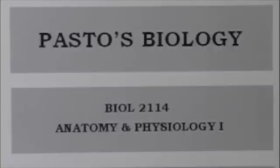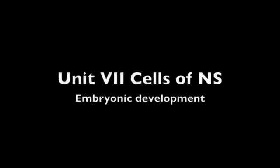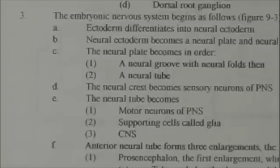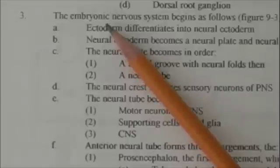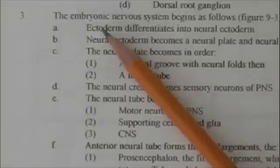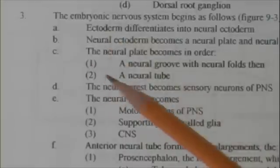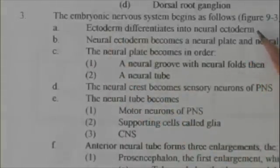Pasto's biology. Topics from the study guide. In order to understand the nervous system, it's helpful to have some idea of the embryonic development of the nervous system. I often begin an organ system with a little bit of information about its embryonic development. We'll look at figure 9-3 for that.